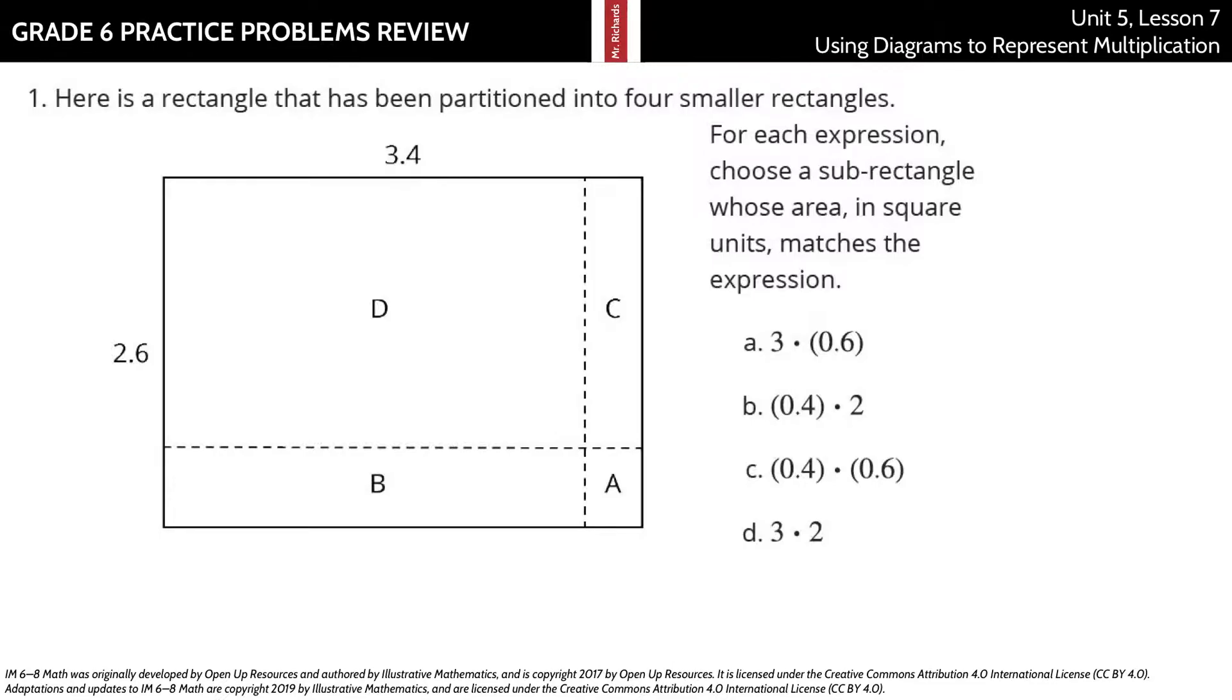I believe that this part of the 2.6 is simply 2, which leaves us with 0.6 for that length. And then out of this entire side that's 3.4, this piece of it is 3 and this piece of it is 0.4.